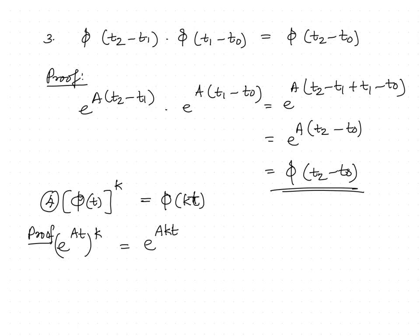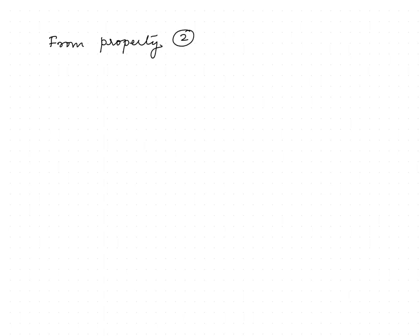This is nothing but phi(At), just because e^(At) is nothing but phi(t). From property 2 we have phi(-t) as phi_inverse(t).